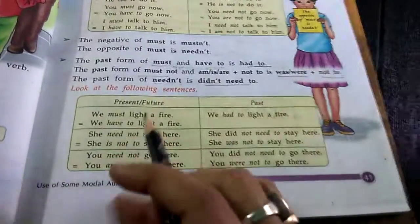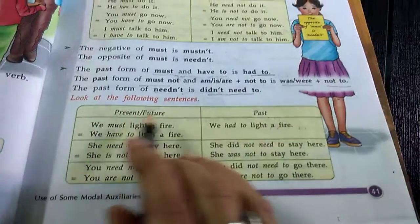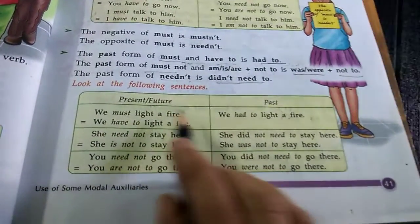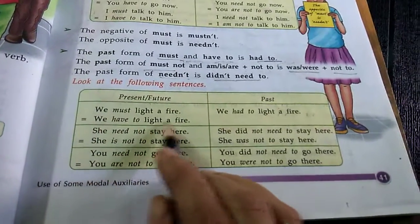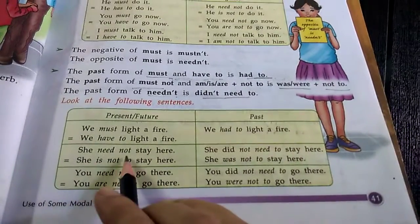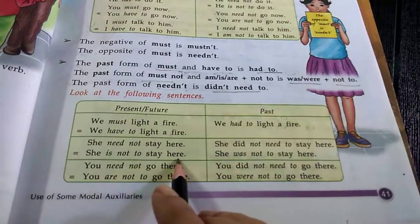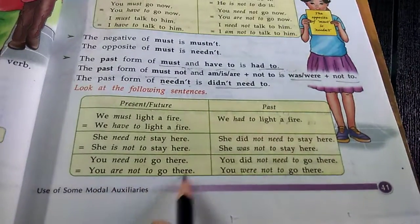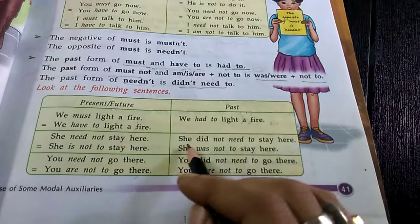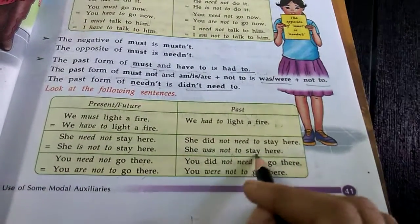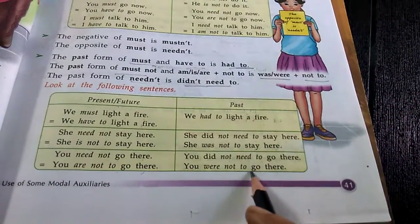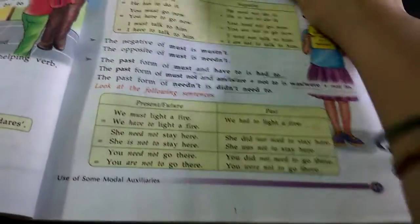The past form of must and have to is had to. The past form of must not and am/is/are not to is was or were not to. The past form of need not is didn't need to. Examples — Present/Future: We must light a fire / We have to light a fire. We need not stay here / She is not to stay here. Past: We had to light a fire. She did not need to stay here / She was not to stay here. You did not need to go there / You were not to go there.